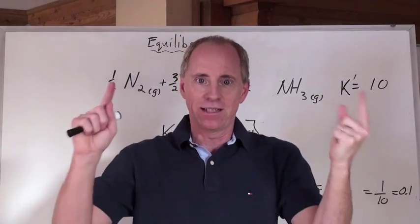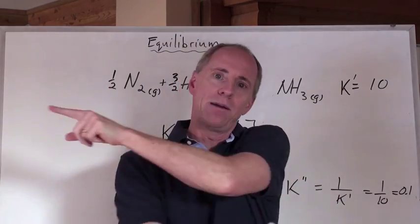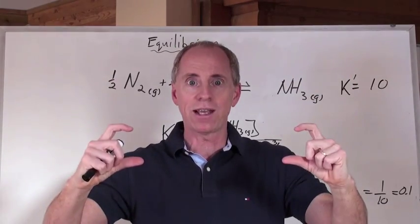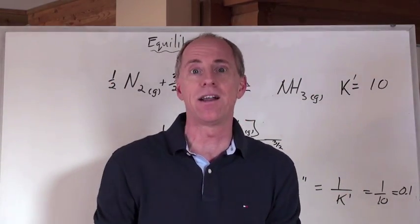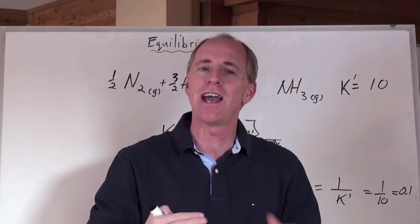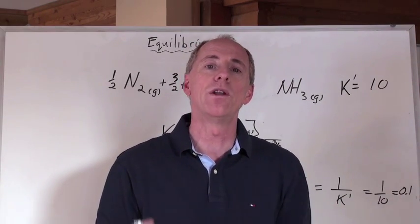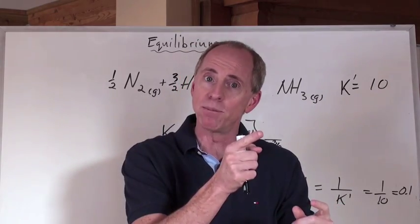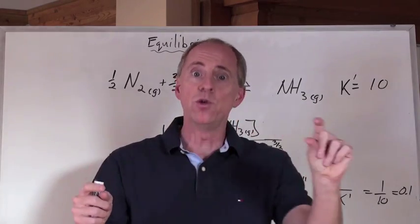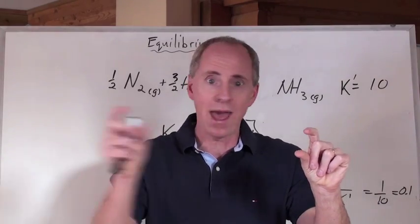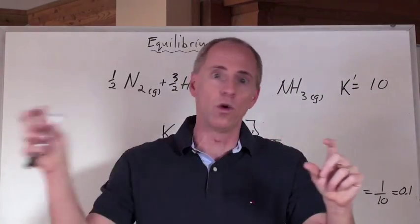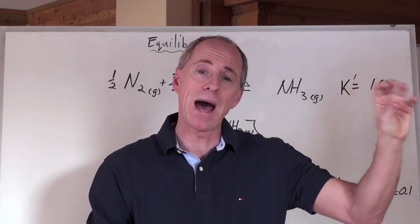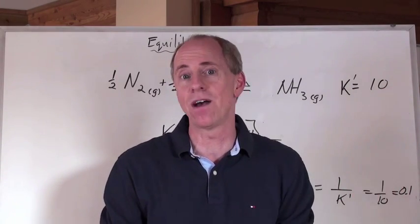Now, what if somebody says, take this equation, reverse it, and multiply it by two? Then you're going to reciprocal that K value, and then square that entire thing. Okay, so make sure that you have those relationships right. When you reverse something, it's one over. And then, if you multiply a number through an equation, like one half going through an equation, or two or three going through an equation, then what you have to do is make that the power now to which that K value is taken.